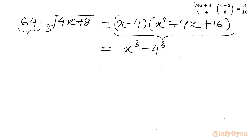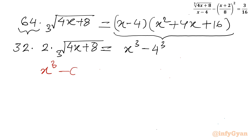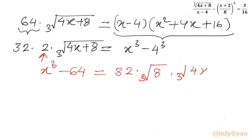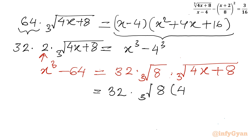Here I will write 64 as 32 times 2, then rewrite the cube root of (4x + 8). So we have: x³ minus 64 equals 32 times cube root of 2 times cube root of (4x + 8). Using properties of radicals, I can club these two cube roots together: 32 times cube root of 8 times (4x + 8). The left hand side is x³ minus 64.